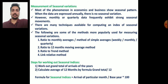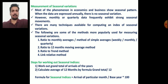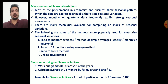Now we will see the different steps for working out the seasonal indices. These steps are very important for your semester and practical examination. From the given data we have to calculate the seasonal indices. Firstly, we have to work out the grand total of arrivals for each year — that is, the summation of January through December, all 12 months — to get the grand total for a particular year.